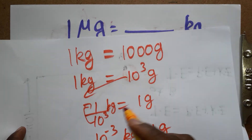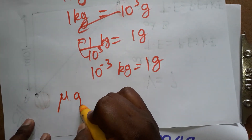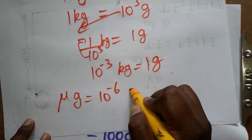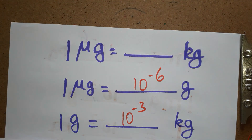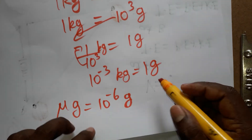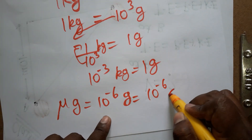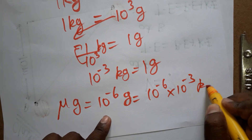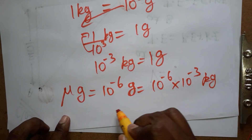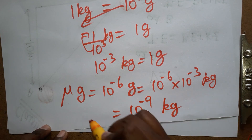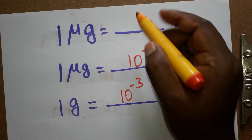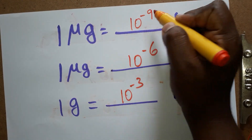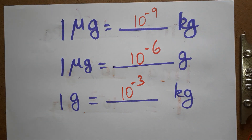Now for the full conversion — microgram to kilogram: one microgram is 10⁻⁶ grams, and one gram is 10⁻³ kilograms. Multiplying: 10⁻⁶ times 10⁻³ equals 10⁻⁹. So one microgram is equal to 10⁻⁹ kilograms. Thank you for watching — if you like the channel, please subscribe.